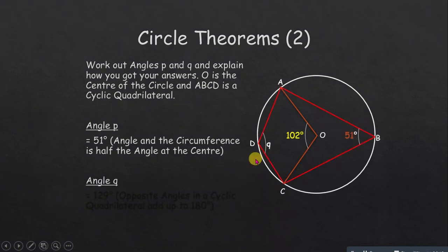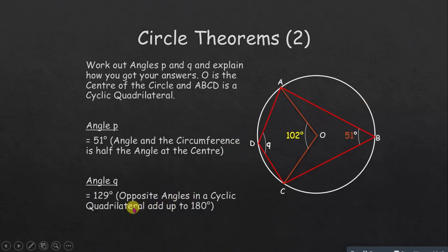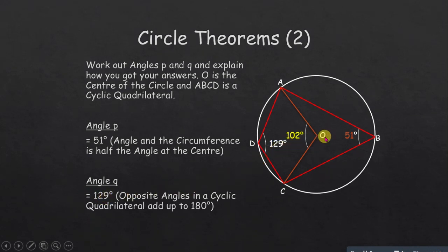Since p is 51 degrees and p plus q equals 180 degrees, we take 180 minus 51 to get q. Therefore q equals 129 degrees. When you add p and q you get 180 degrees.